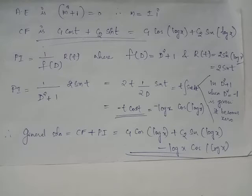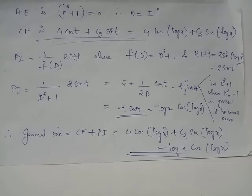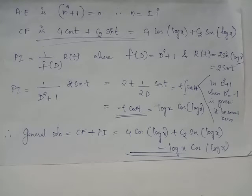The real part of the root alpha equals 0 and the imaginary part beta equals 1. Therefore, the complementary function for equation 2 is e^(0·t) multiplied by (c1 cos t + c2 sin t). The corresponding complementary function for equation 1 is obtained by substituting t = log x, giving c1 cos(log x) + c2 sin(log x), where c1 and c2 are arbitrary constants.